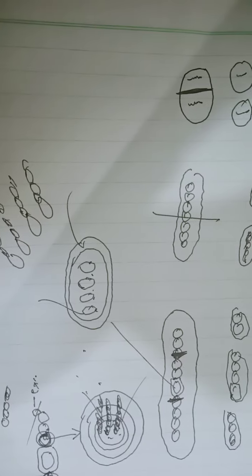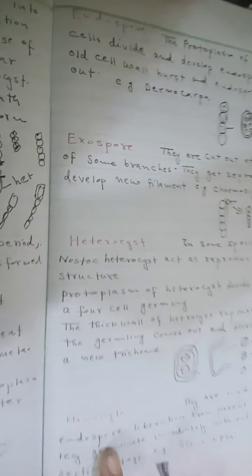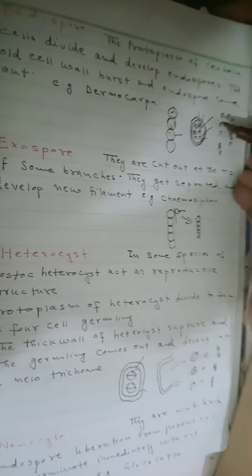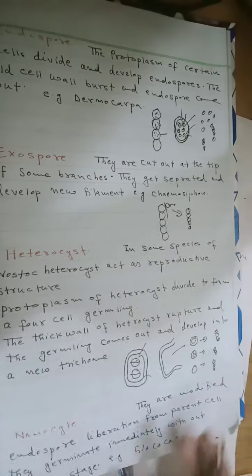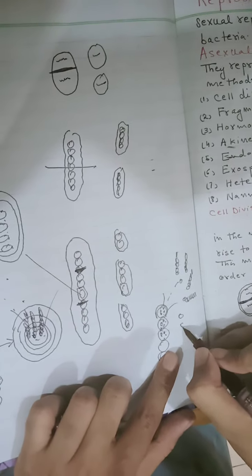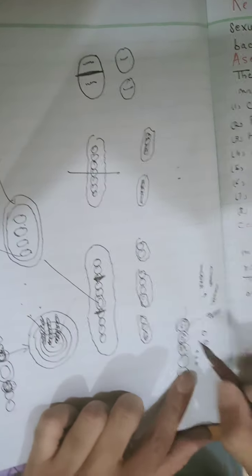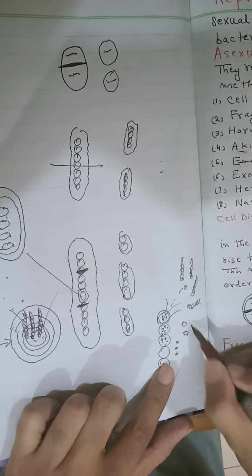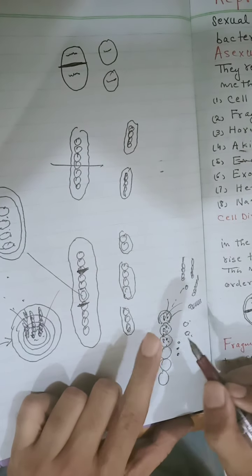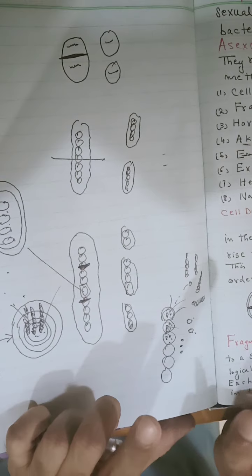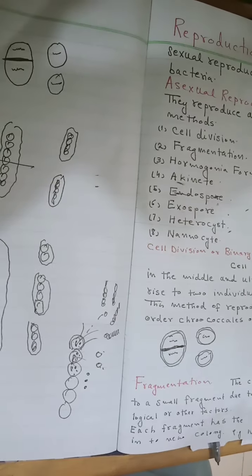The last method is nanocyst formation. Nanocysts are nothing but modified endospores. They differ from endospores in that endospores are larger in size, while nanocysts are smaller. Also, endospores go through a resting stage, but nanocysts do not — they directly germinate into new cells without a resting stage.